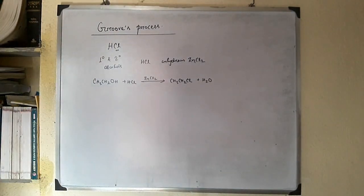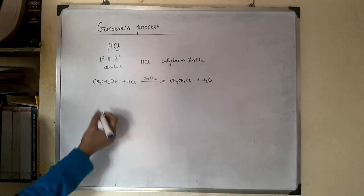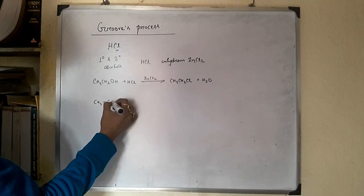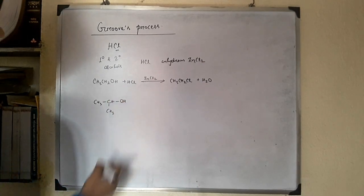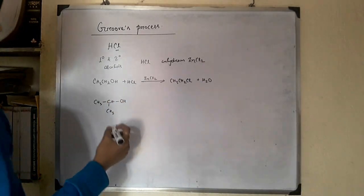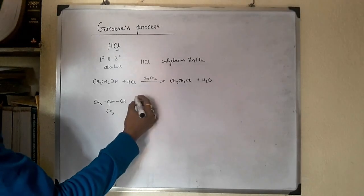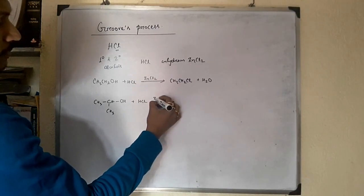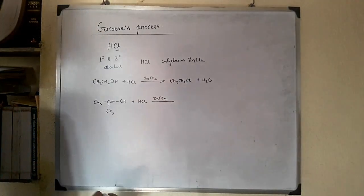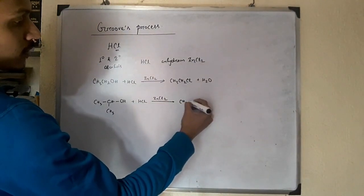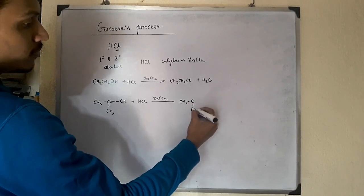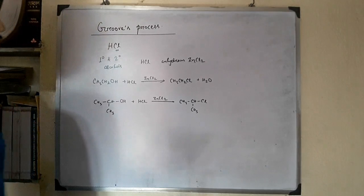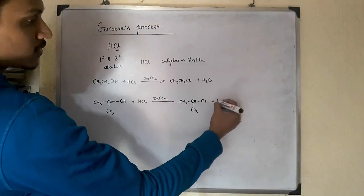Let's take another example, a secondary alcohol. This is propane-2-ol, which reacts with HCl in the presence of zinc chloride to form isopropyl chloride or 2-chloropropane plus water.